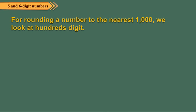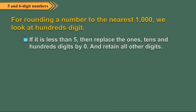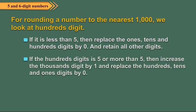For rounding a number to the nearest 1000, we look at the hundreds digit. If it is less than 5, replace the ones, tens, and hundreds digits by 0 and retain all other digits. If the hundreds digit is 5 or more, increase the thousands digit by 1 and replace the hundreds, tens, and ones digits by 0.